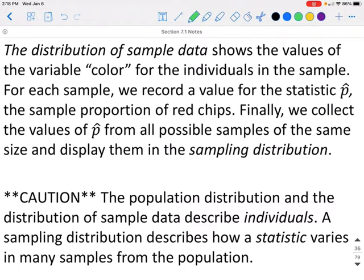You need to be cautious. The population distribution and the distribution of sample data describe individuals. A sampling distribution describes how a statistic varies in many samples from the entire population.